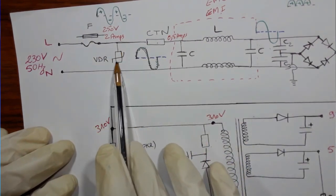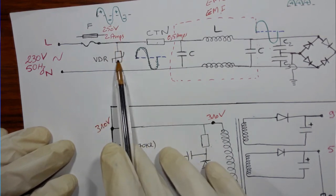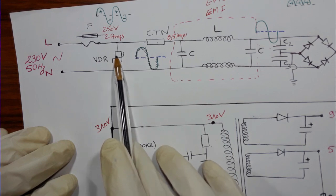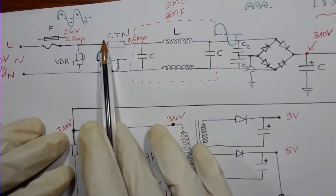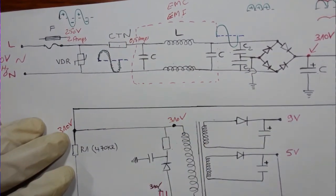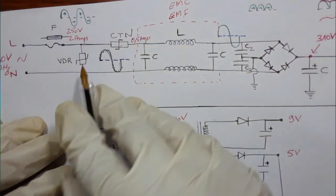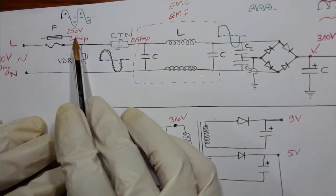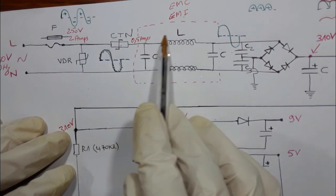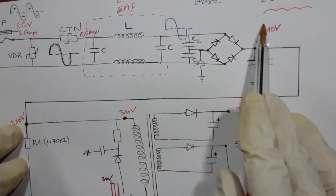Here we have the VDR or varistor, also for protection — it protects from high voltage spikes and can support up to 280 volts. Next is the NTC (CTN) resistor, which has a similar symbol to the VDR. This NTC limits the inrush current in order to protect the capacitor downstream.